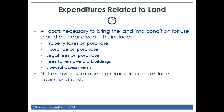Any net recoveries from selling removed items reduce the capitalized cost. For example, if you buy land for $1 million, pay $30,000 to remove a dilapidated building, but sell a piece of equipment found inside for $5,000, then the acquisition cost of the land is $1,000,000 + $30,000 − $5,000 = $1,025,000, which you would debit to land and credit cash.